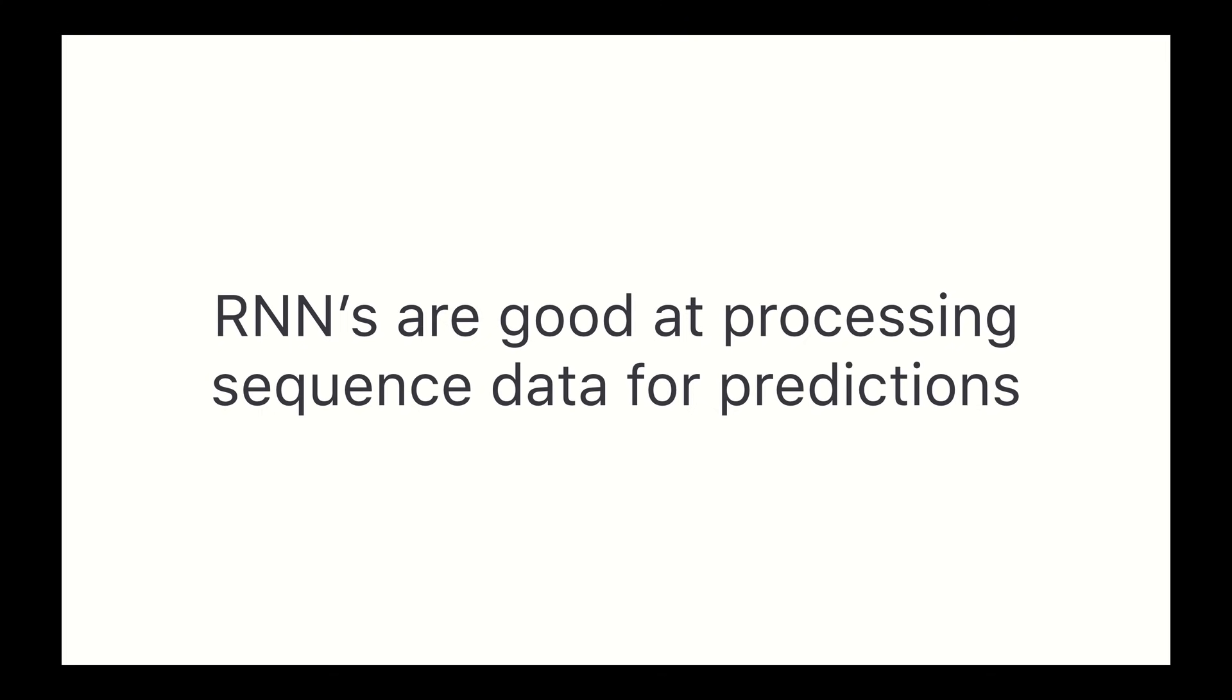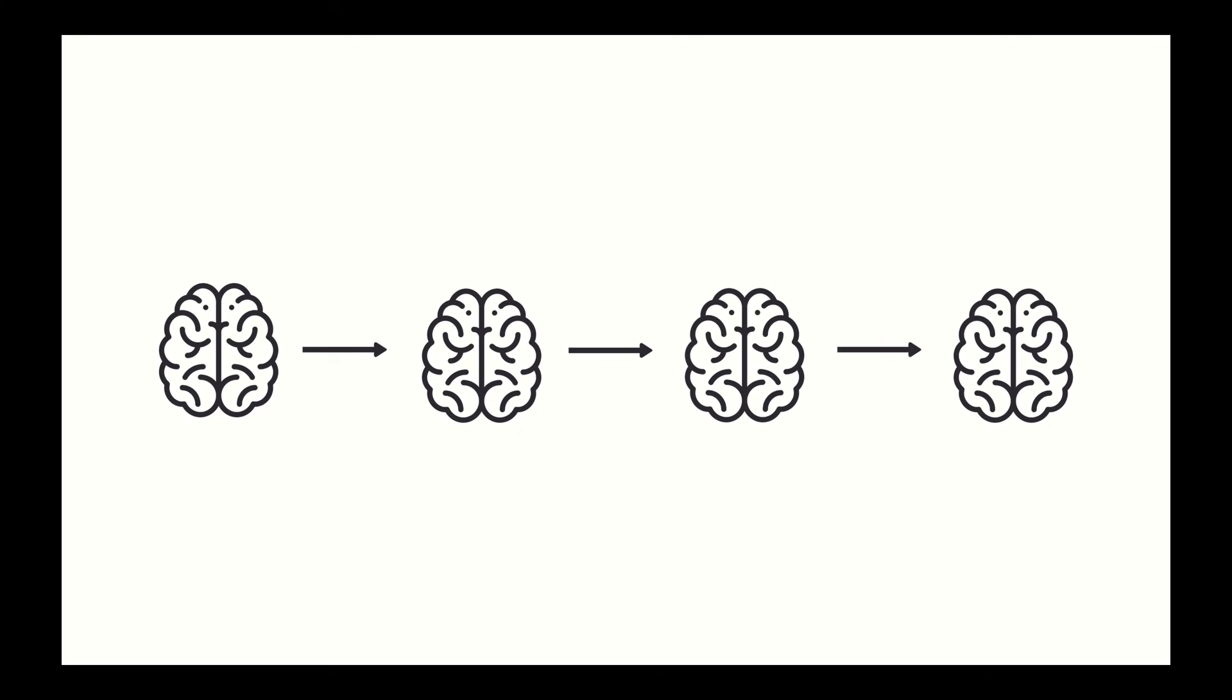Okay, so RNNs are good at processing sequence data for predictions, but how? Well, they do that by having a concept I like to call sequential memory. To get a good intuition behind what sequential memory means, I'd like to invite you to say the alphabet in your head. Go on, give it a try.